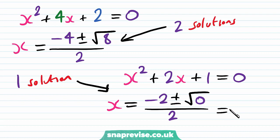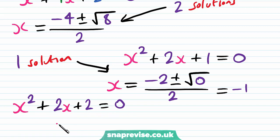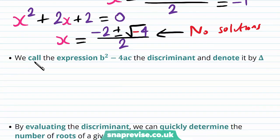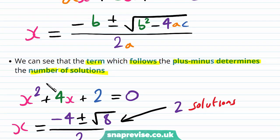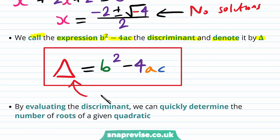The solution will just be minus 1, corresponding to minus 2 over 2. Lastly, if our equation is x squared plus 2x plus 2 equals zero, we get x equals minus 2 plus or minus the square root of minus 4, all divided by 2. So here we have no solutions, because there is no such thing as the square root of minus 4. In general, we call the expression b squared minus 4ac the discriminant and denote it by delta.